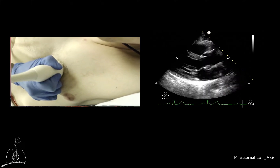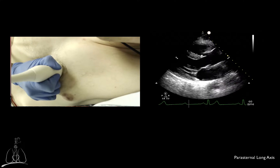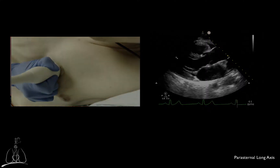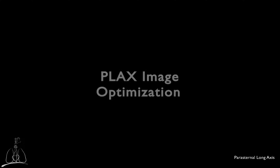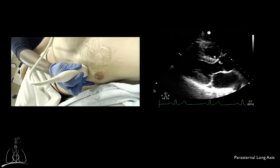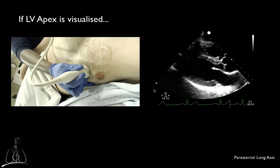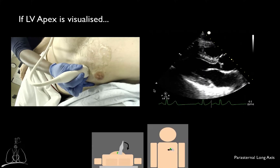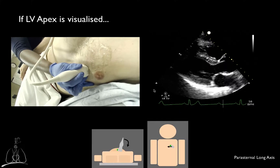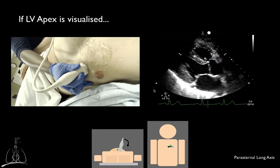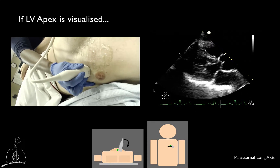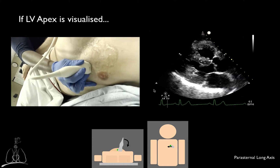Careful manipulation of the transducer will allow you to optimize the view in the vast majority of patients. If the apex of the left ventricle is visualized on the screen, two manipulations should be attempted: rocking of the probe towards the sternum, or sliding of the probe towards the sternum.